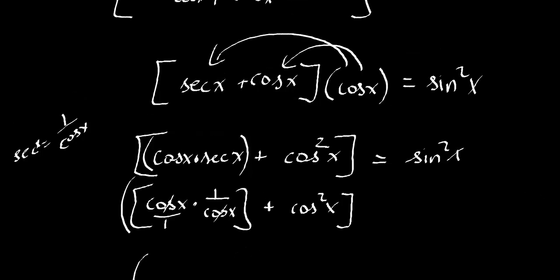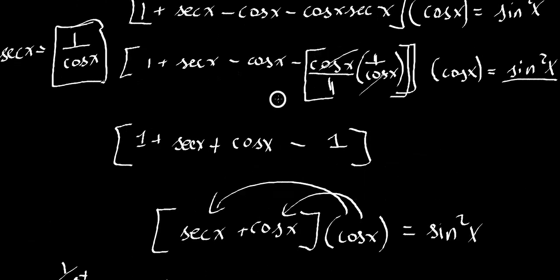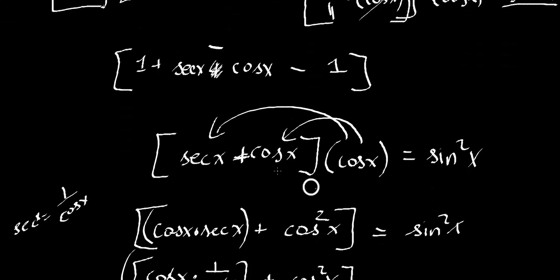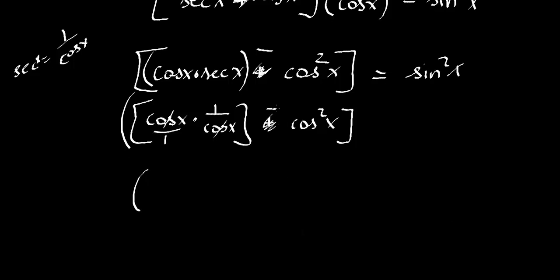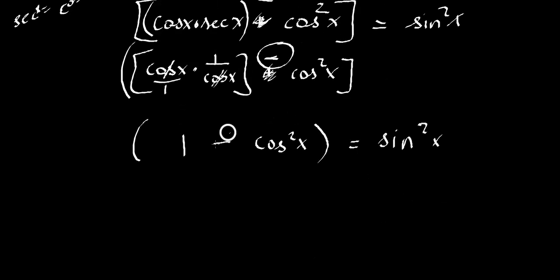That should be a minus — I did something wrong. This is supposed to be a negative cosine x times secant x, so the result is negative 1, not positive. I apologize about that. So we are left with 1 minus cosine x squared. And it has to equal sine x squared. Indeed, if you know your identities, 1 minus cosine x squared equals sine x squared — because from sine x squared plus cosine x squared equals 1, moving cosine over gives 1 minus cosine x squared equals sine x squared.